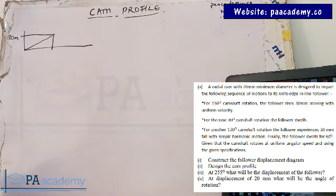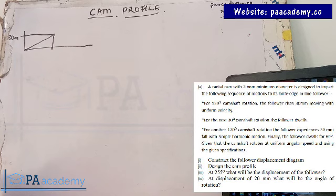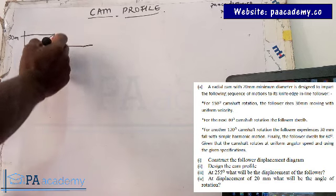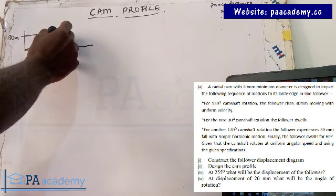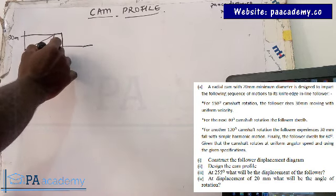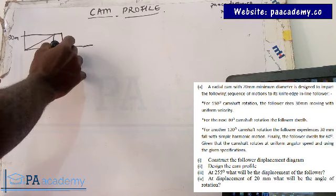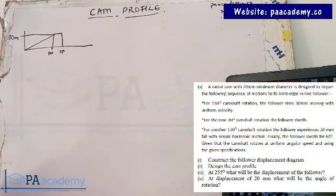For another 30 degrees of camshaft rotation, the follower dwells — meaning it continues on the straight line. So if this place is 150, and we add another 30, then this place is 180. Then for another 120 degrees of camshaft rotation, the follower experiences a 30mm fall with simple harmonic motion.